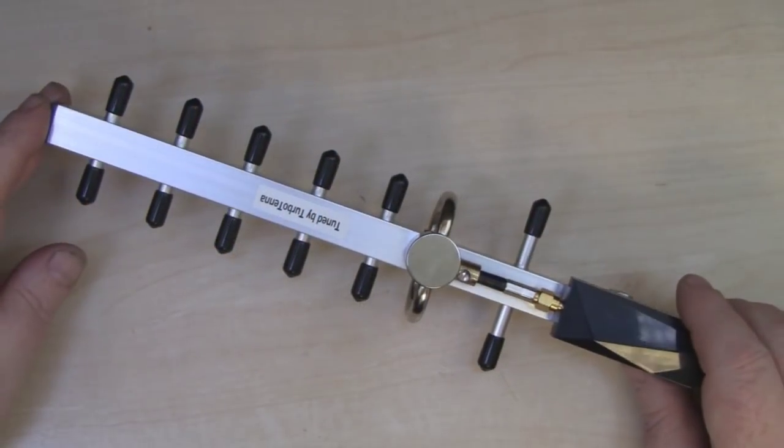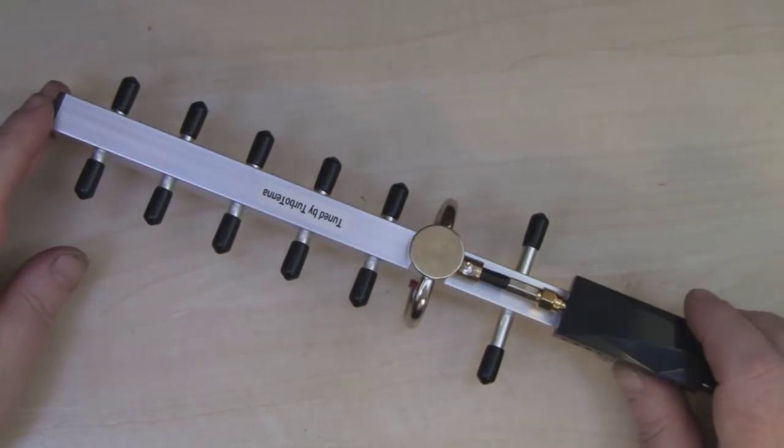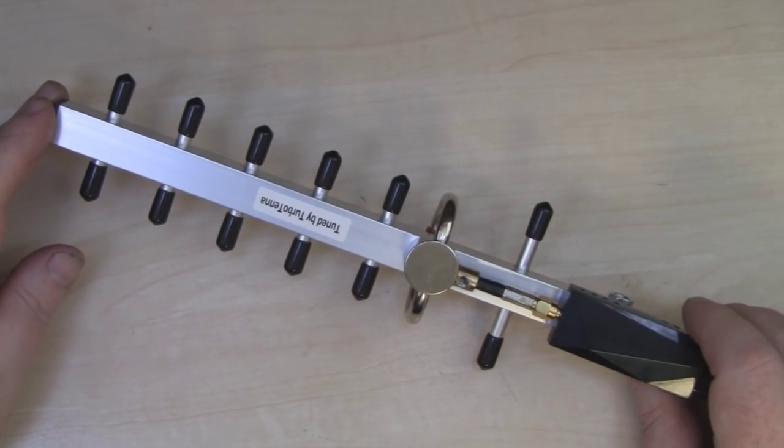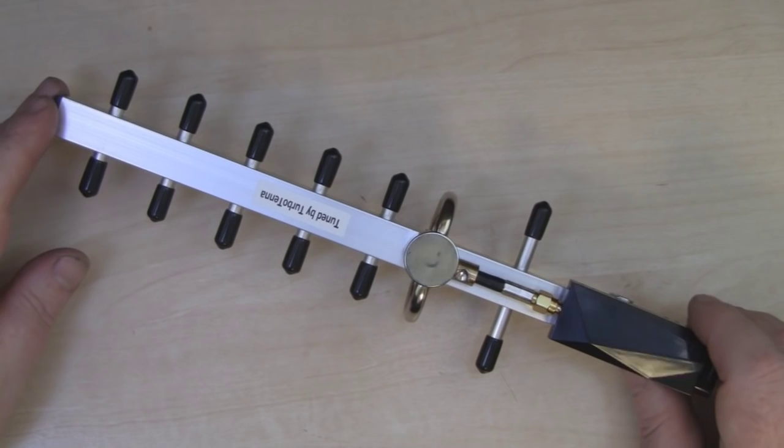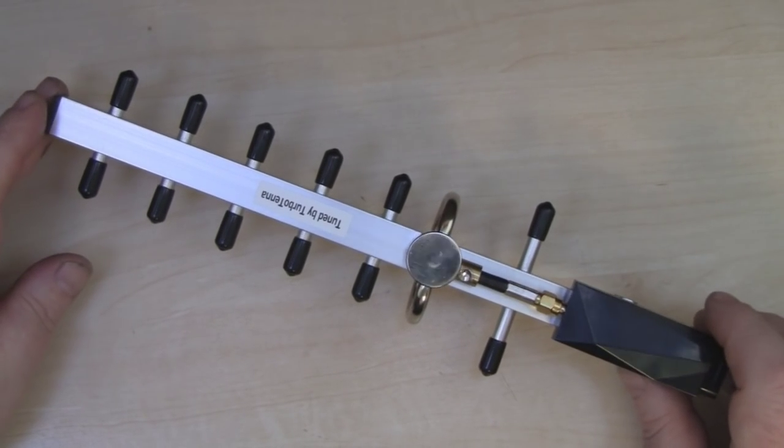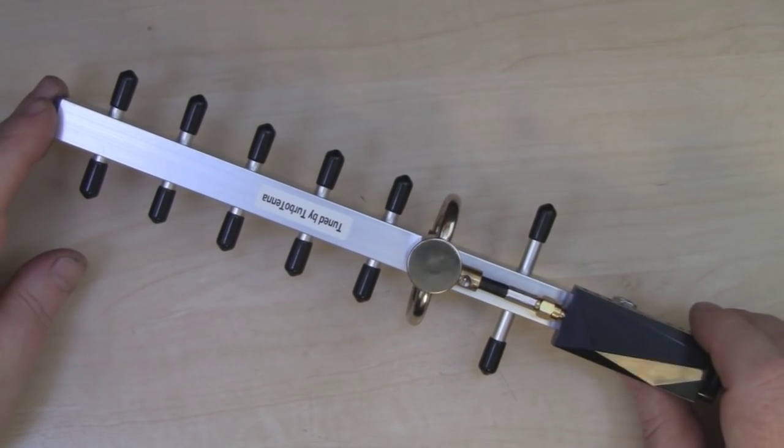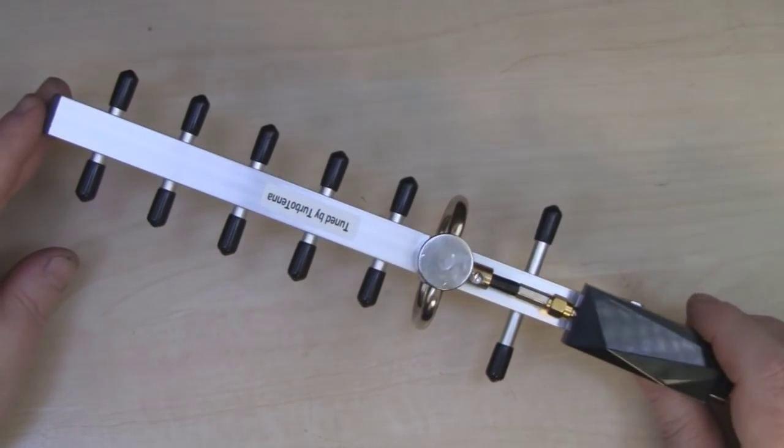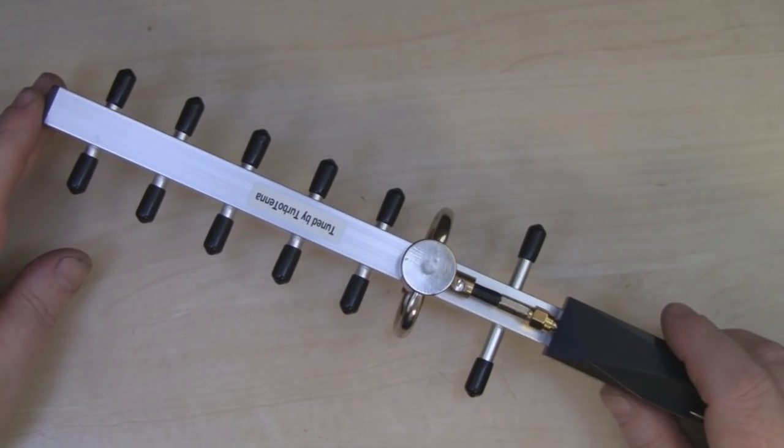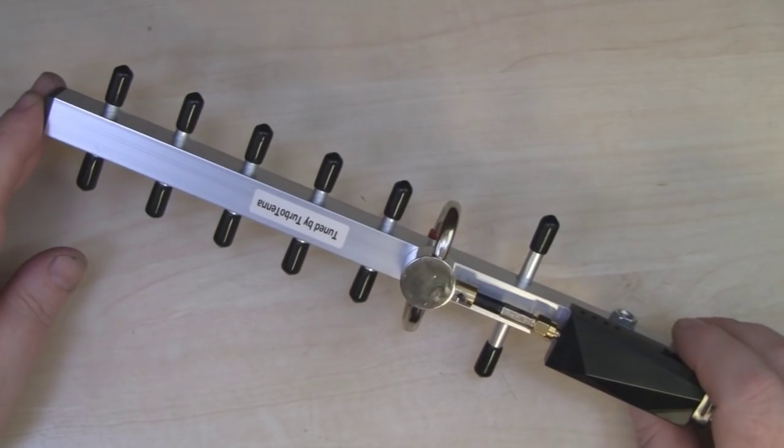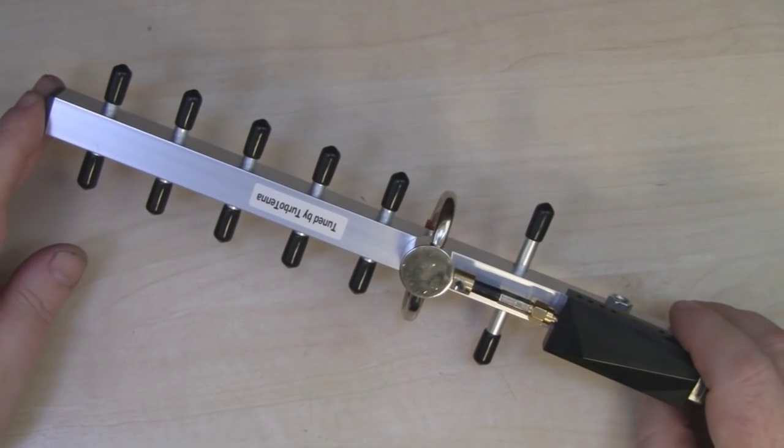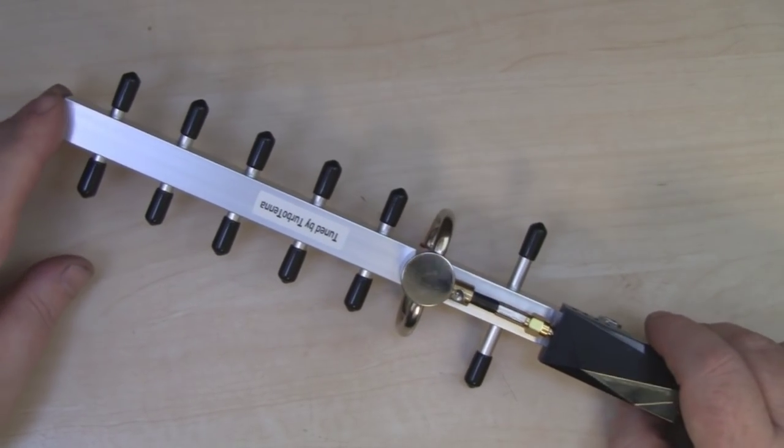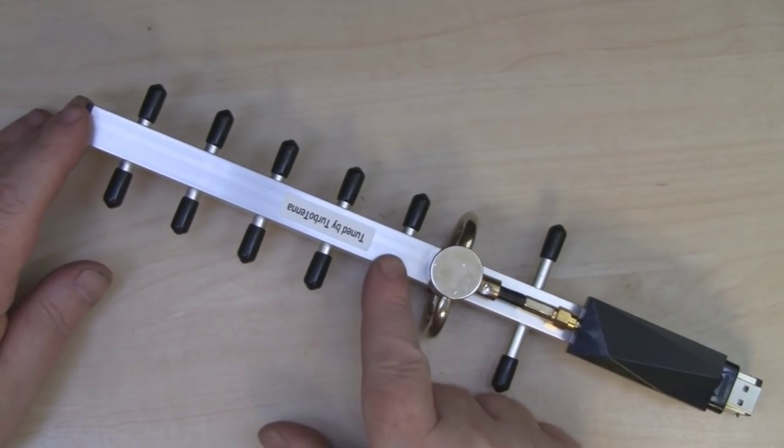To conclude then, is the Turbo Tenna worth the price tag of somewhere between £70 and £90? Nowhere near. At the end of the day they've sold thousands of these worldwide. With that kind of buying power, the parts for this antenna I would expect to come in at no more than around £15, so you can see the kind of markup they're actually making.